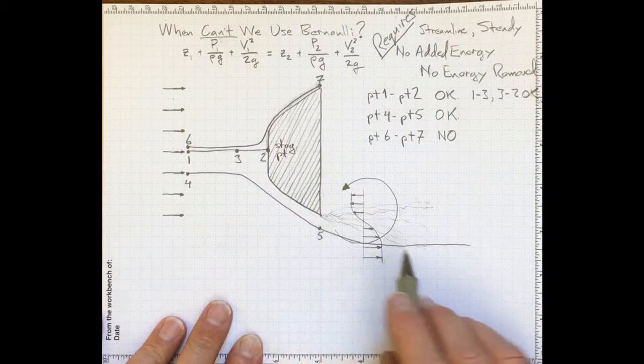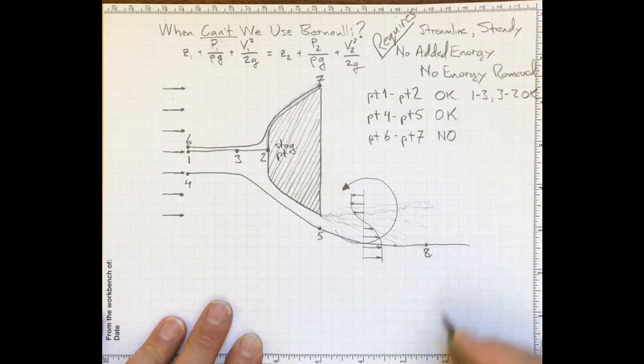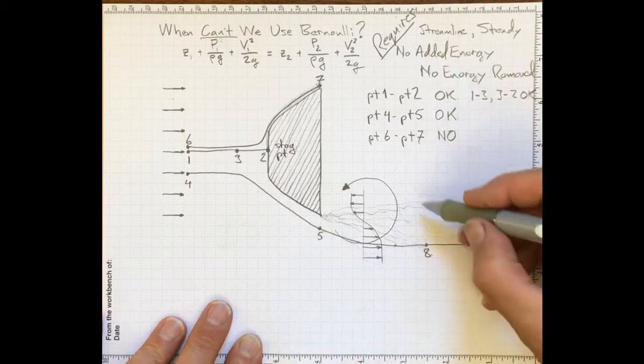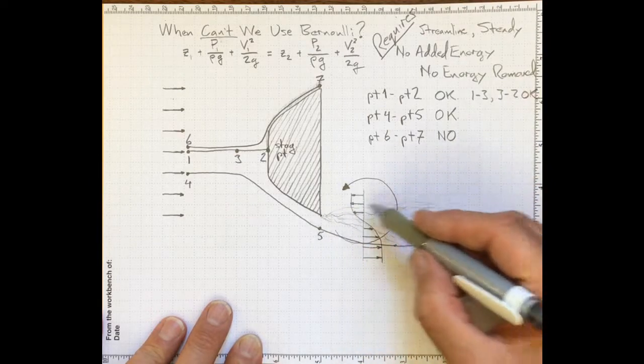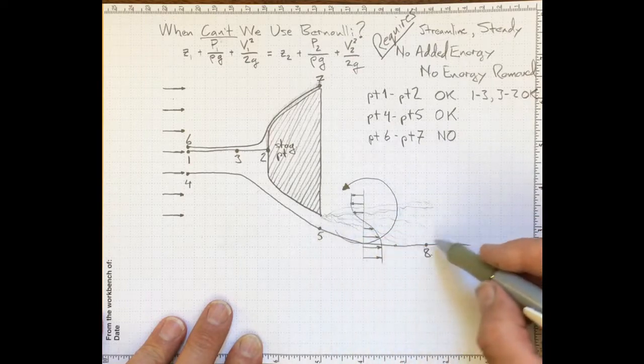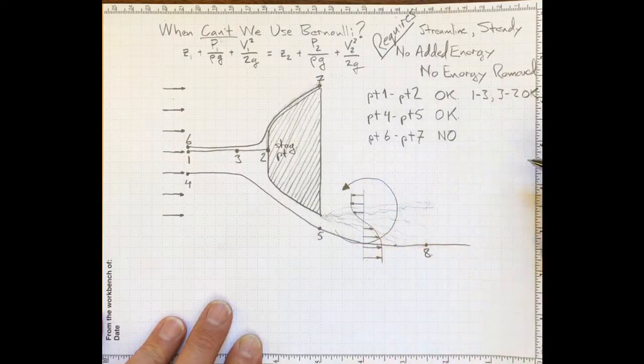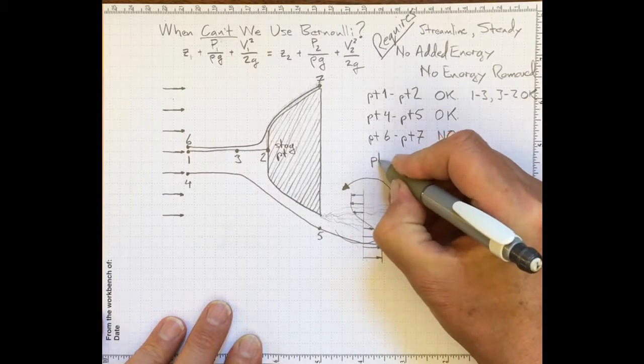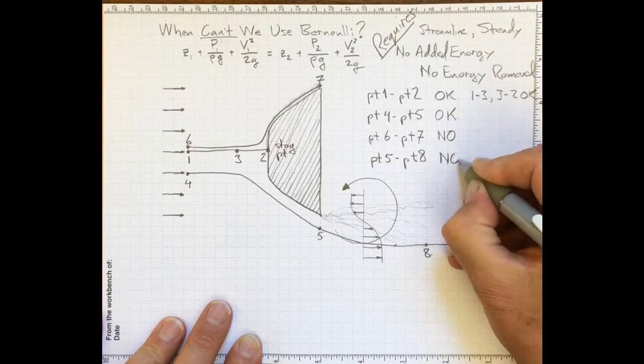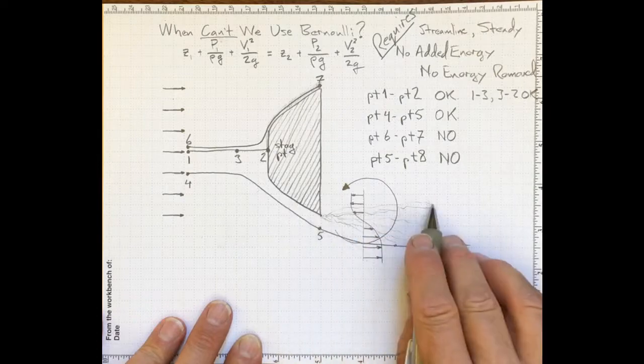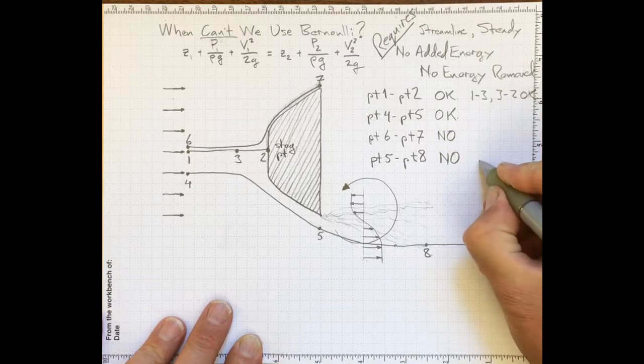How about if we go back to this streamline and consider a point out here somewhere, say, point eight. By the time we get to point eight, we're seeing the flow has been slowed down a fair bit due to interaction with this shear layer. Energy is being taken away from that particle and transported into this recirculation zone. So, going from point four to five, we're okay. Going from point five to point eight, no. Because we've got this shear layer that's taking energy out of the flow. So we're not obeying that requirement.